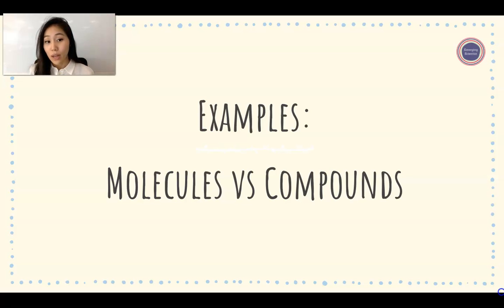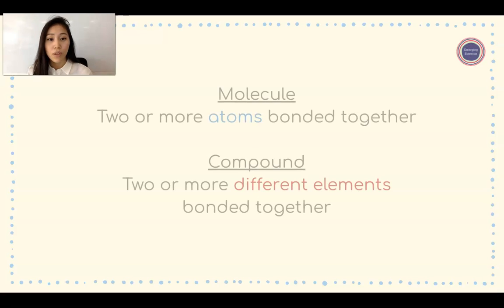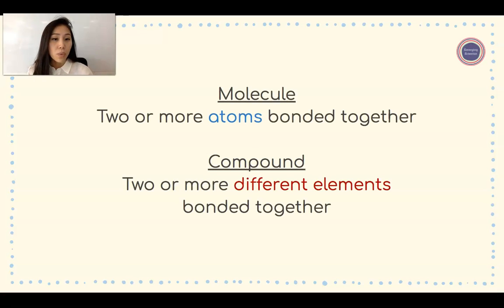At the end of this video, we will take a look at a couple examples and you'll be able to understand why. A molecule is when two or more atoms are bonded together, and a compound is when two or more different elements are bonded together.